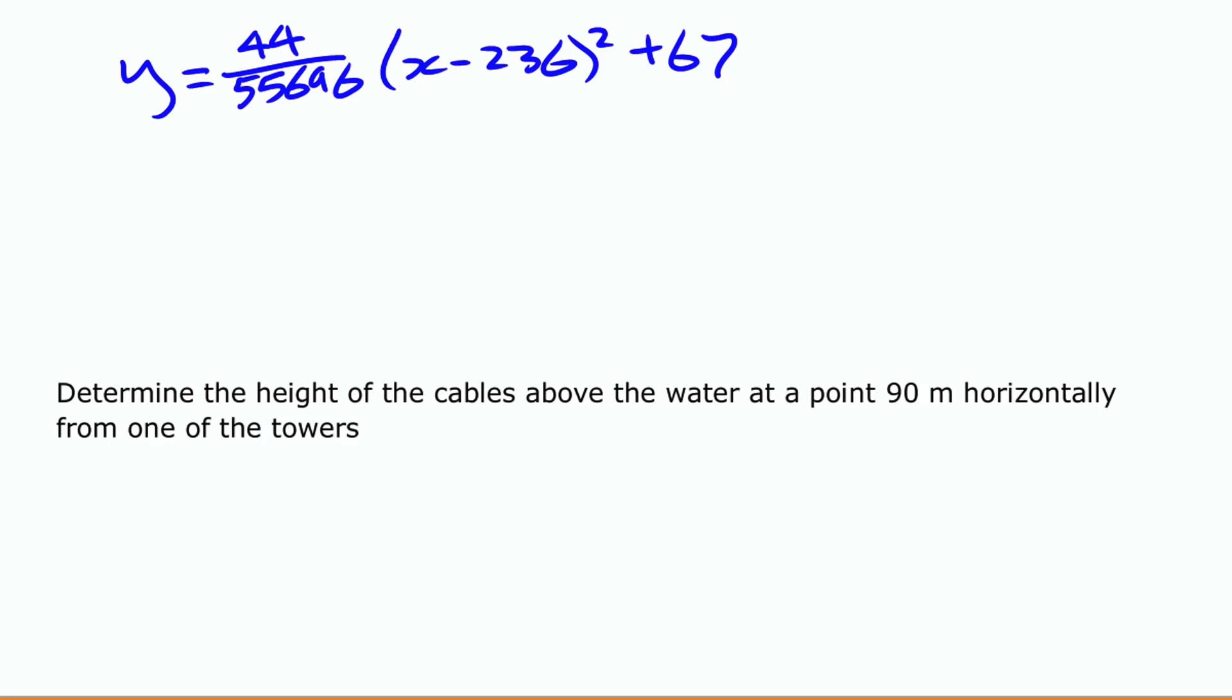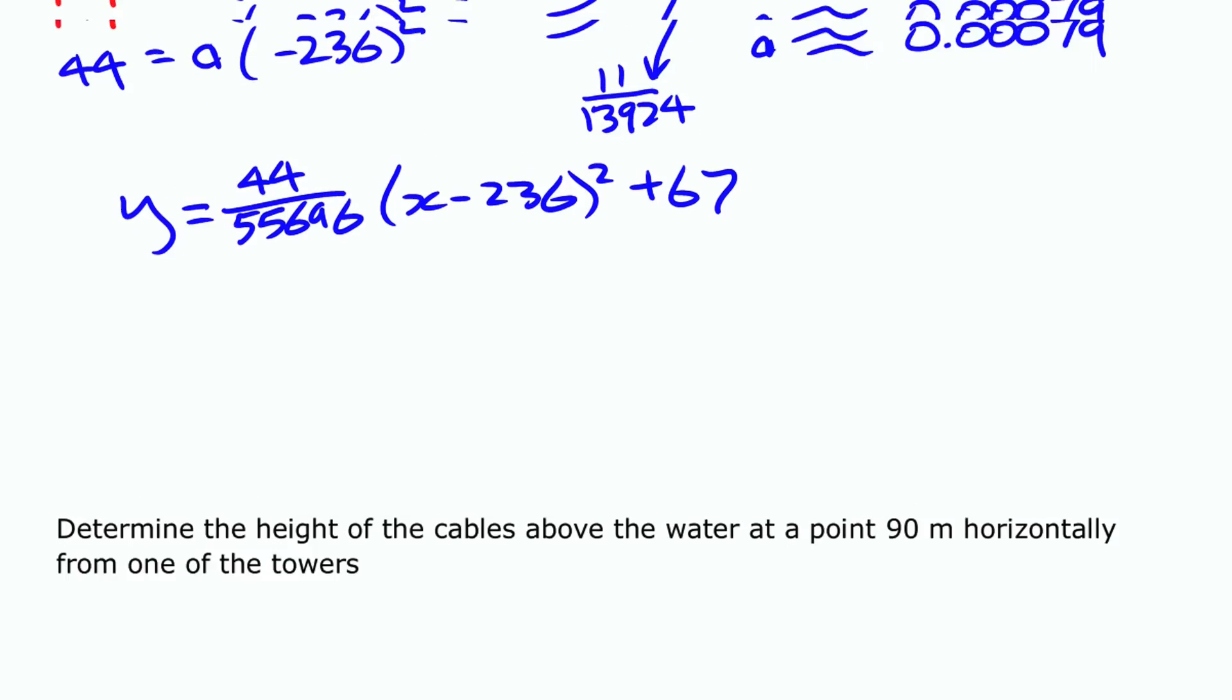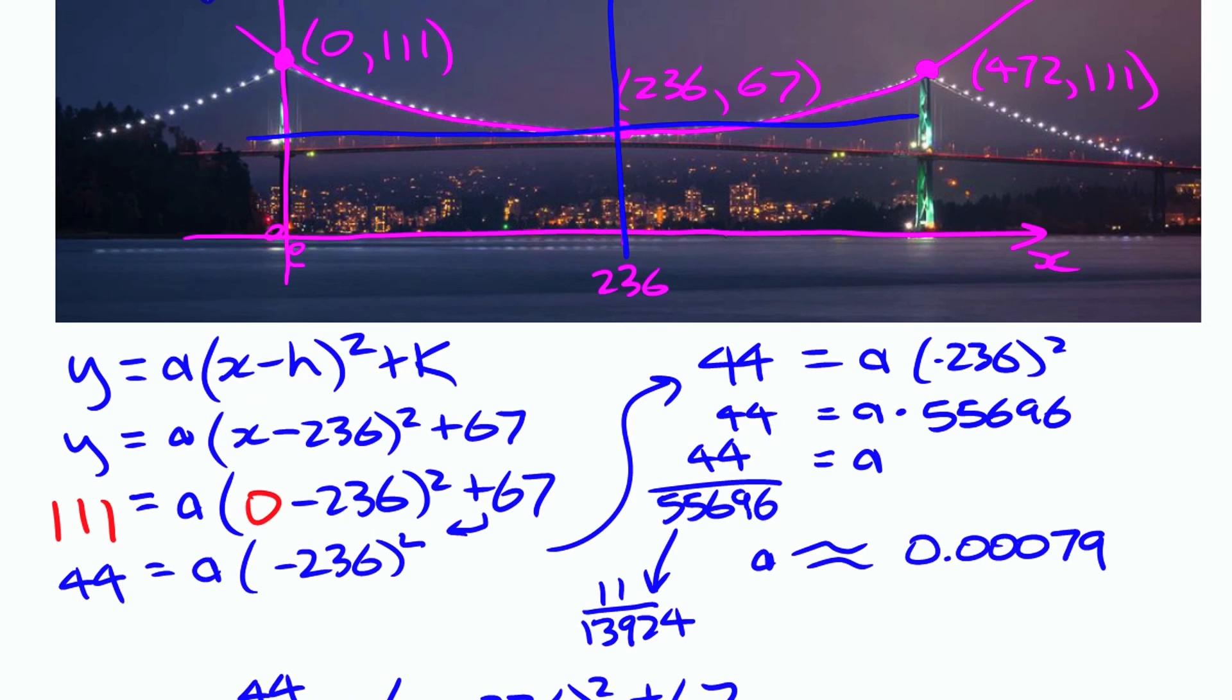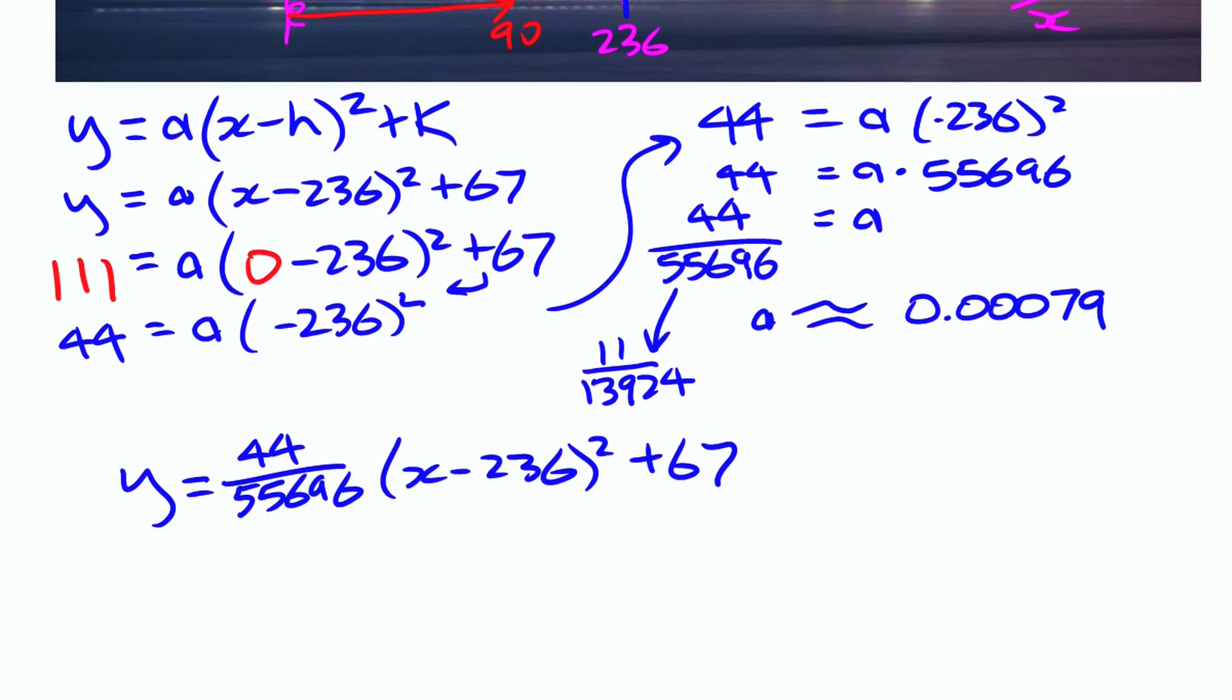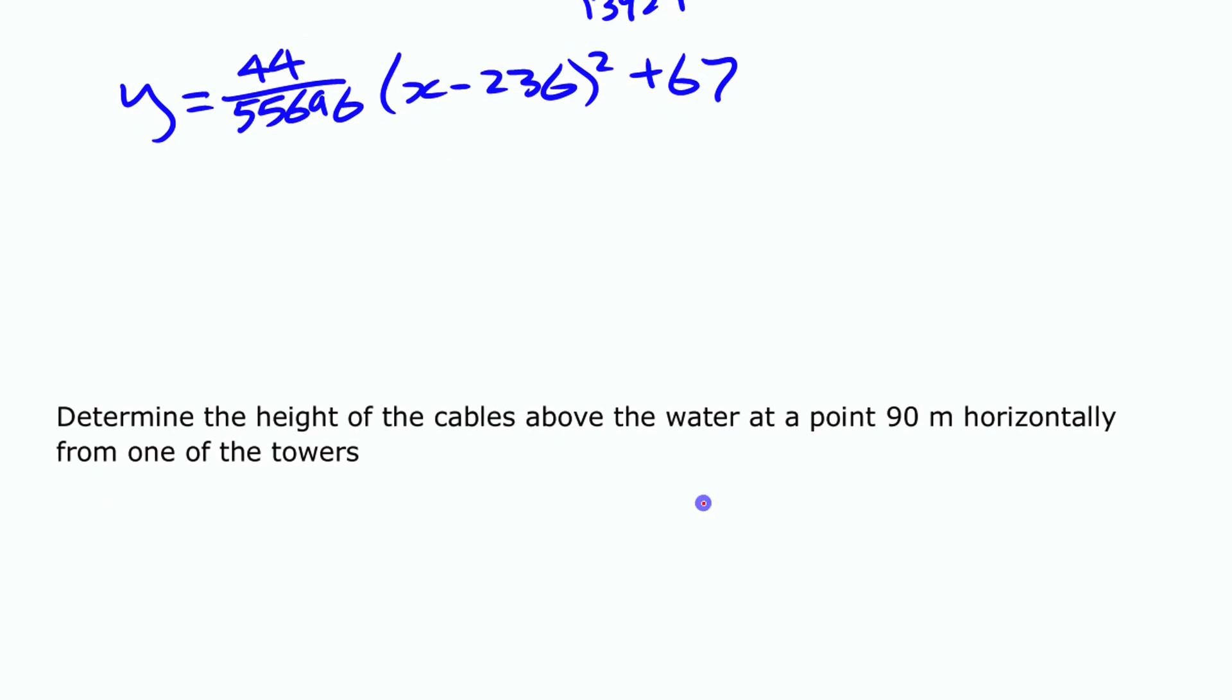Right? If I want to know the height at 90 meters over here, all I have to do is put in x equals 90, and then I'll find that height there. That's what I'm looking for: the y value. I want the y value when x is 90. So if I put in 90 there and then just work everything else out—I'll do this one up here; I already have that function there.